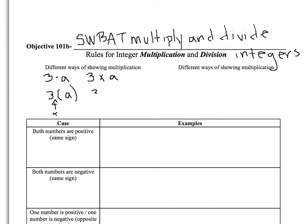Similarly, you might see something like (3)(A) — two parentheses touching each other also means to multiply. The last way is something like 3A, where the 3 and the A are touching each other. The 3 is called a coefficient, the A is called a variable, and when a coefficient and a variable are touching like that, it means to multiply.